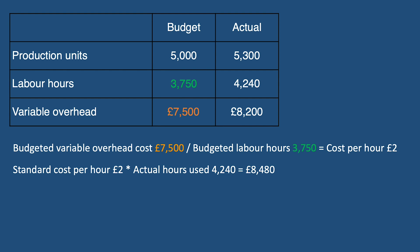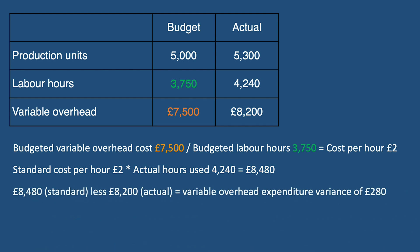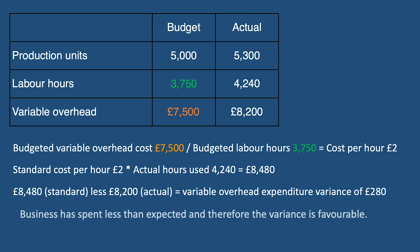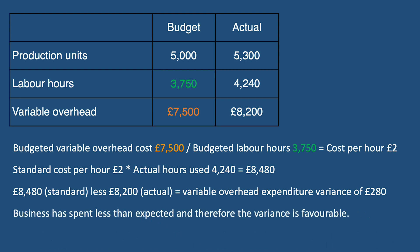This is the standard variable overhead cost for the labour hours worked and we can now compare this figure to the actual variable overhead cost to give us our expenditure variance. This would therefore be £8,480 less £8,200 to give us a variance of £280. As the business has spent less than expected this would mean the variance is favourable.